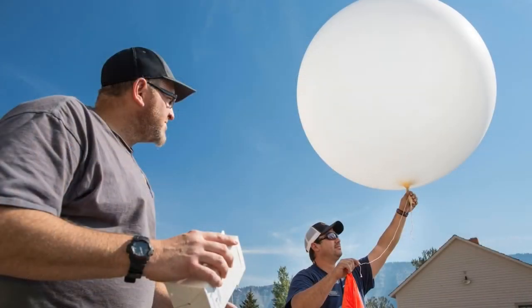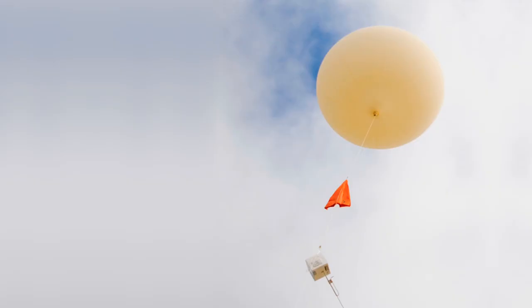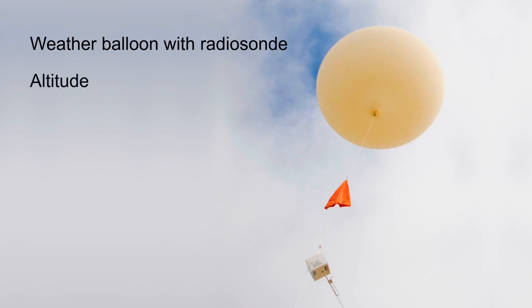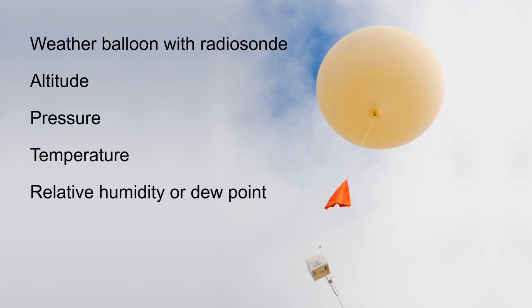Soundings are made with weather balloons, such as this one. The weather balloon is released and it will go up in the atmosphere, and attached to the weather balloon is a little device called a radiosonde. This radiosonde measures the altitude, and for different altitudes it will measure the pressure, the temperature, the relative humidity or the dew point, the wind speed and the wind direction. And this information is sent back down.